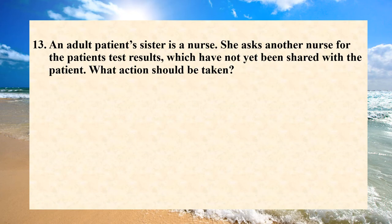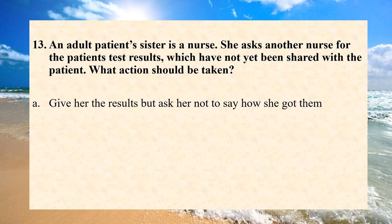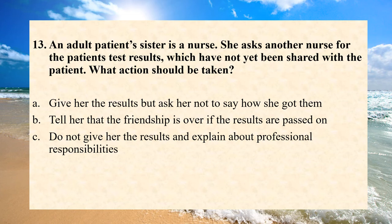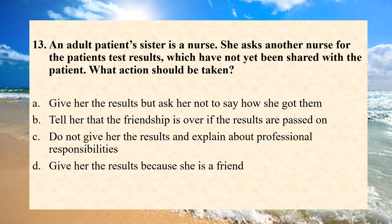An adult patient's sister is a nurse. She asks another nurse for the patient's test results which have not yet been shared with the patient. What action should be taken? A. Give her the results but ask her not to say how she got them. B. Tell her that the friendship is over if the results are passed on. C. Do not give her the results and explain about professional responsibility. D. Give her the results because she is a friend. Answer is C. Do not give her the results and explain about professional responsibilities.